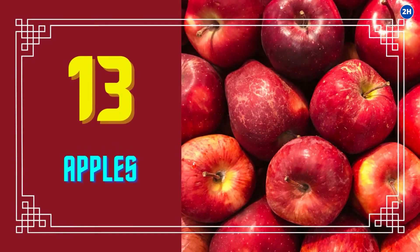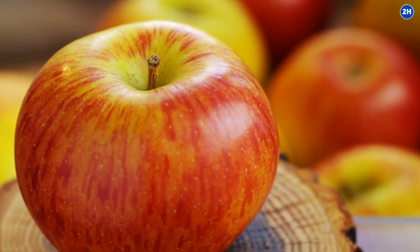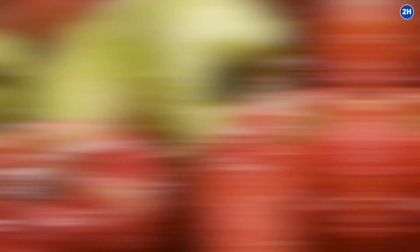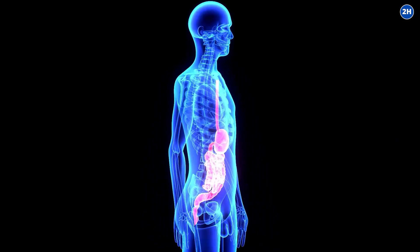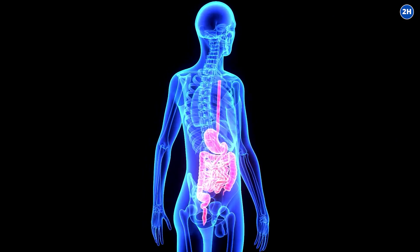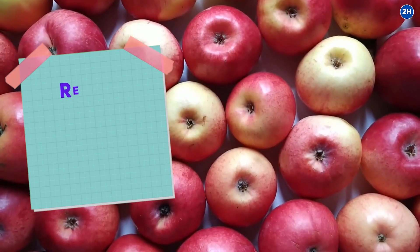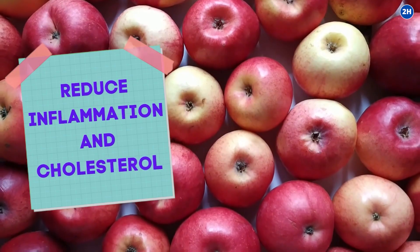13. Apples. Apples are a great source of fiber. The fiber in apples is unusual in binding and removing toxins from the digestive tract before the body can absorb them, which reduces the burden on the kidneys. Apples also reduce inflammation and cholesterol.